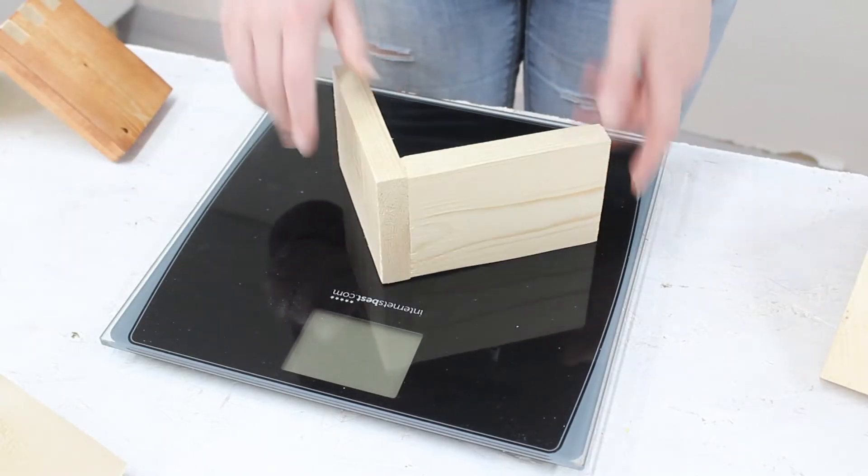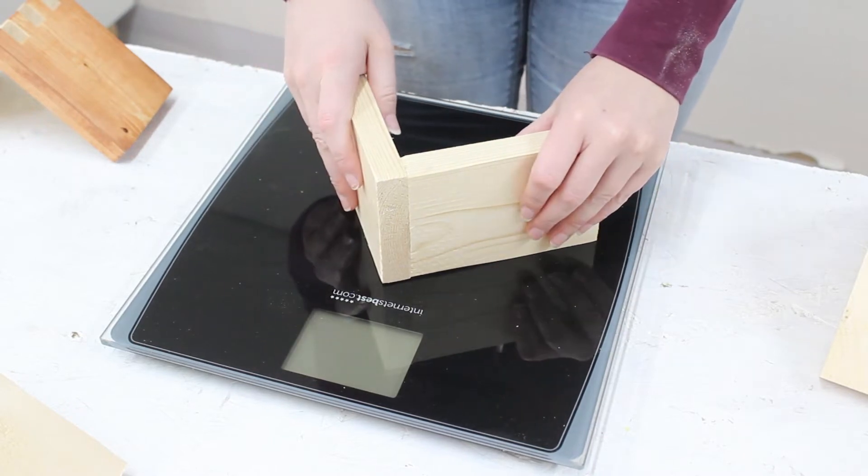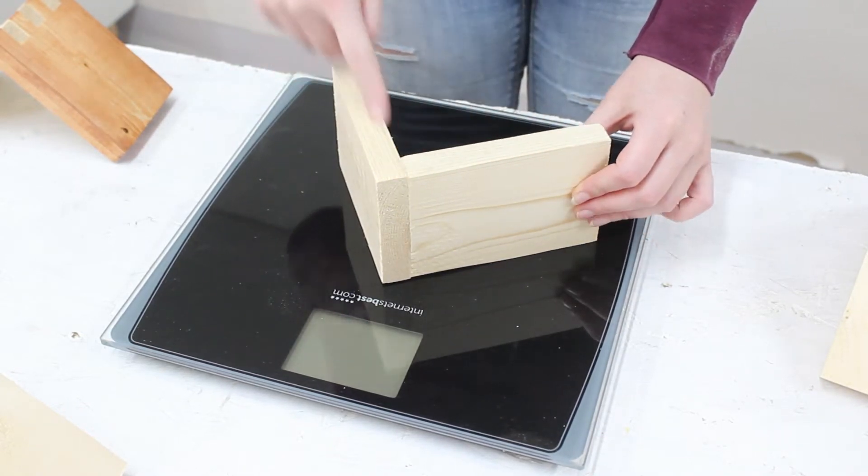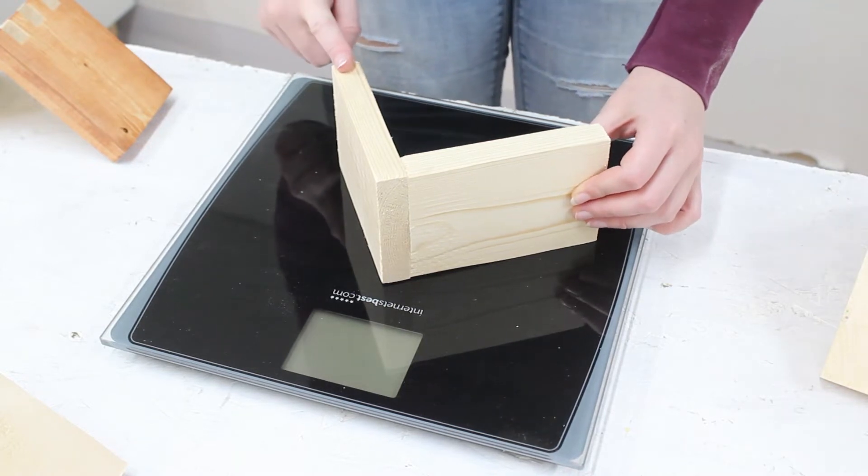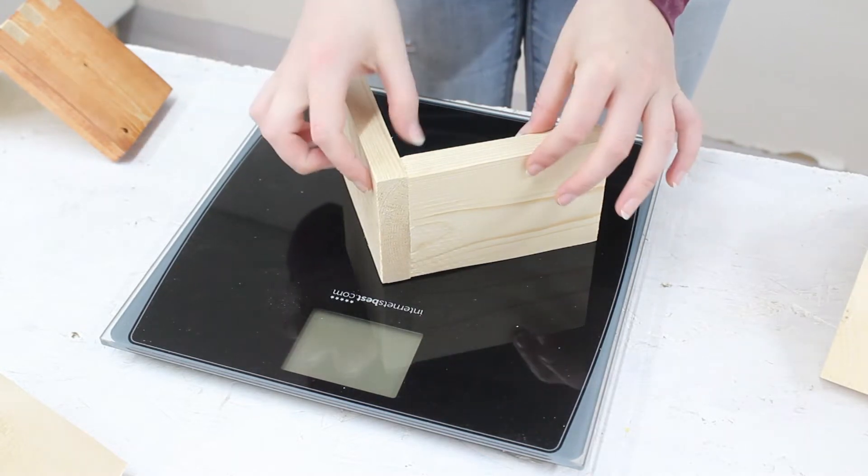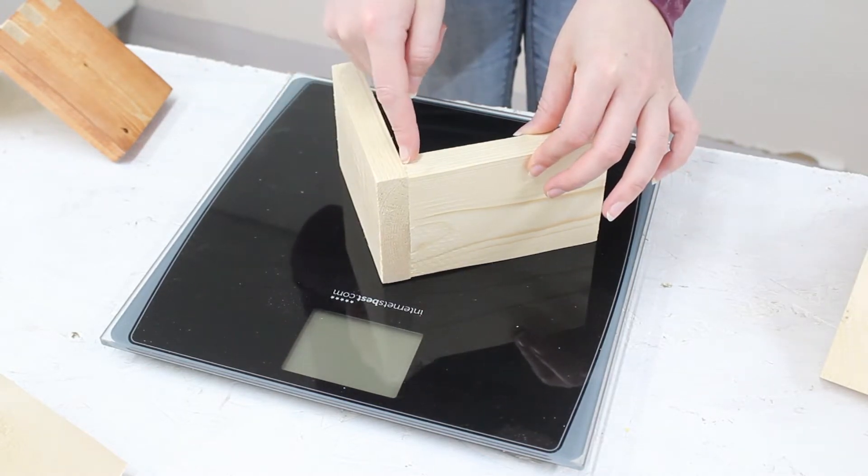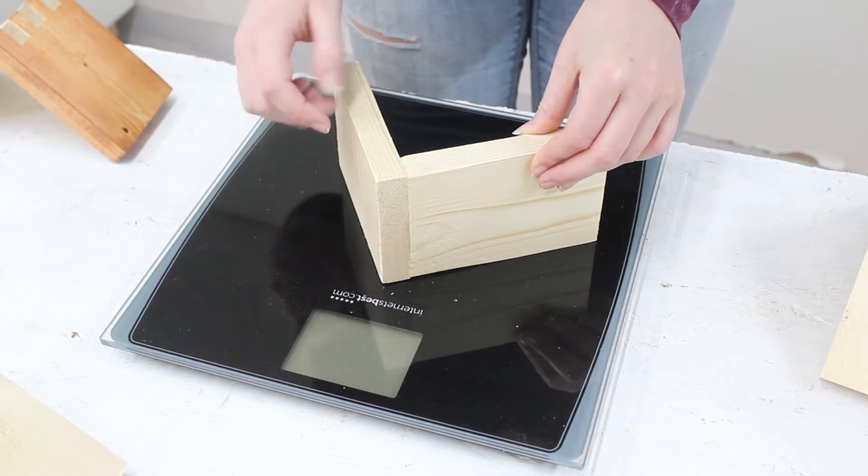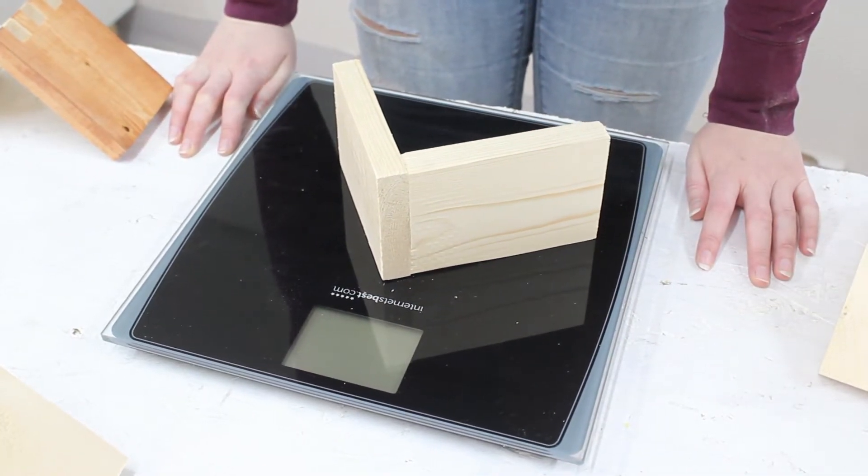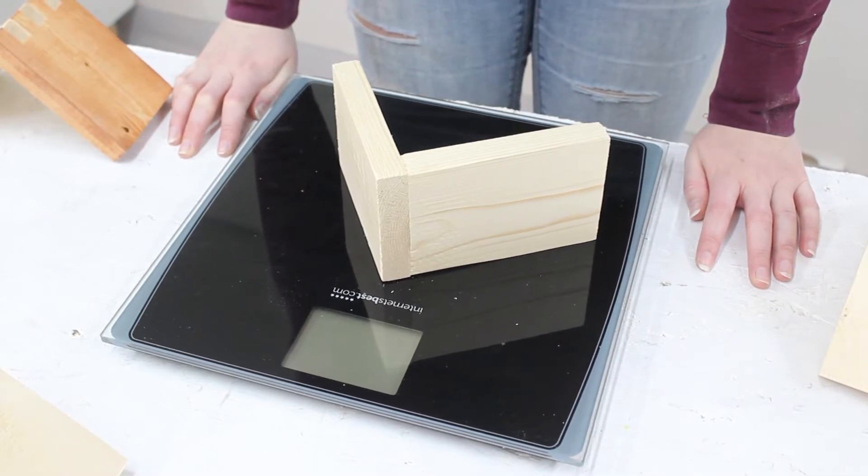All right, so our first test is going to be with the simplest joint possible. This is just a butt joint. We've put one edge up against the other board and glued them together. This is the, I guess, the joint that I think is going to be the weakest simply because wood glue typically doesn't attach to the edge grain of wood all that well. So we're going to start with this one, see how it does, see if my expectations are correct or not.